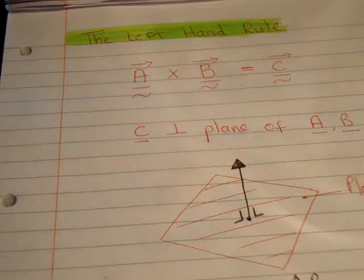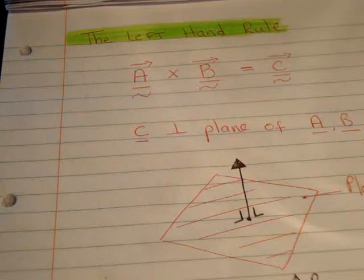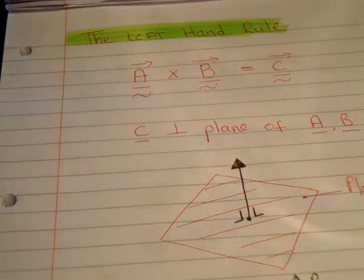So the cross product is an extension of multiplication to vectors. If you multiply two numbers, a and b, or say 5 and 4, you'll get a number, or a scalar, which in this case would be 20. So the magnitude of a multiplied by b is 20.